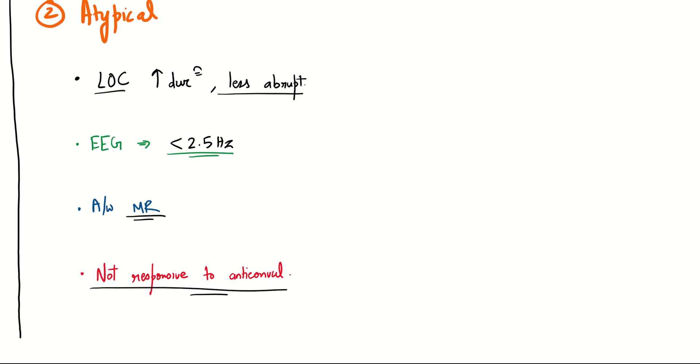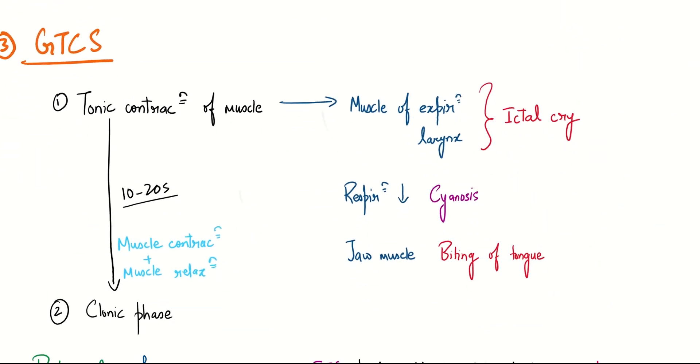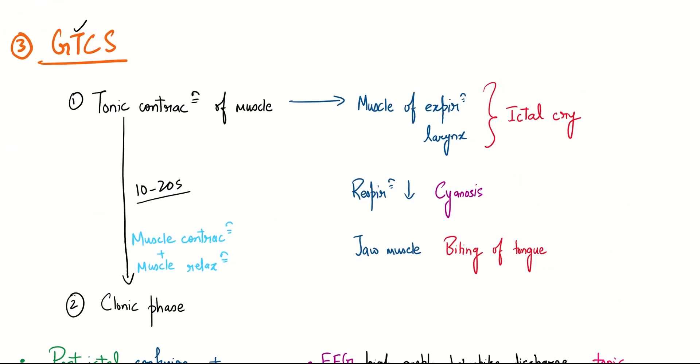In generalized tonic-clonic seizure, the word tonic comes first. The tonic phase will have sustained contraction of muscles, involving the expiratory muscles and the laryngeal muscles, giving rise to a characteristic ictal cry. The respiratory muscles will also contract, giving rise to cyanosis, and the jaw muscles on contraction will lead to biting of the tongue.